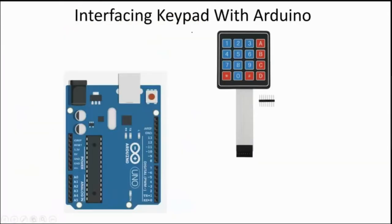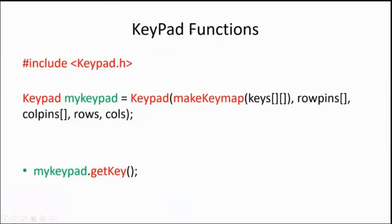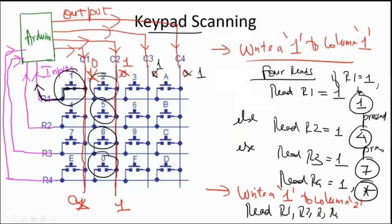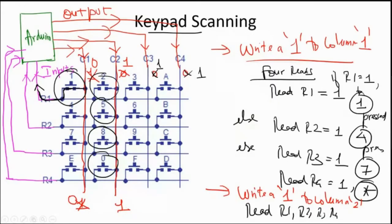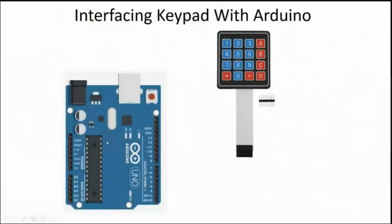We can either implement this scanning manually or take the help of a header file that does the job for you. The keypad.h is a built-in library file available in Arduino. With one simple function — mykeypad.getKey() — you can figure out which key the user has pressed. That is the underlying algorithm I have explained, and the library handles all of it for you.